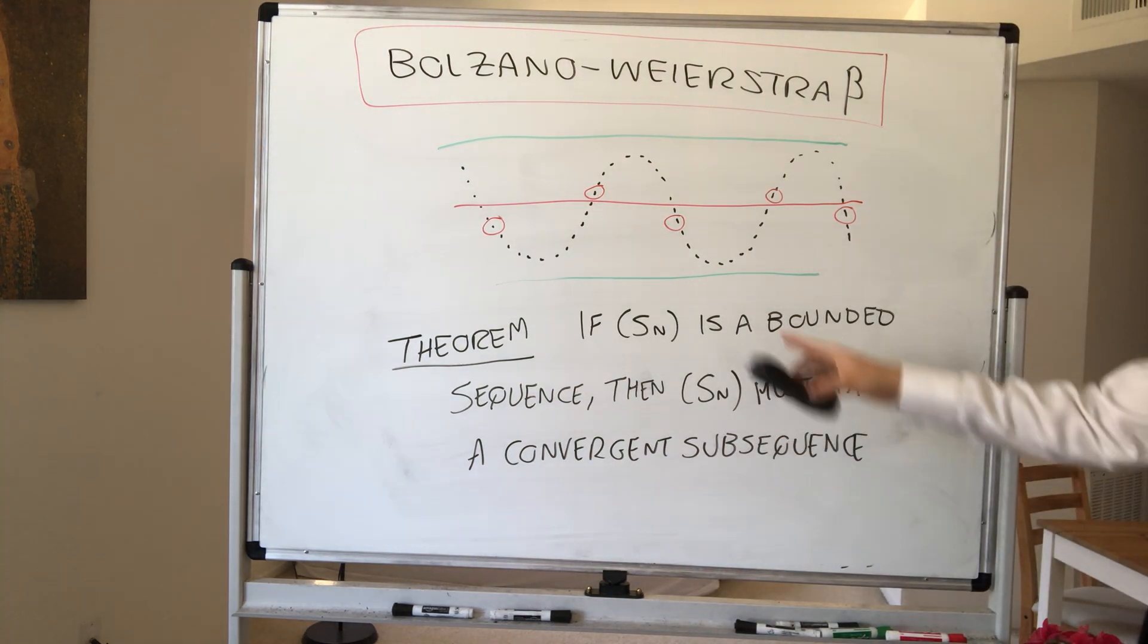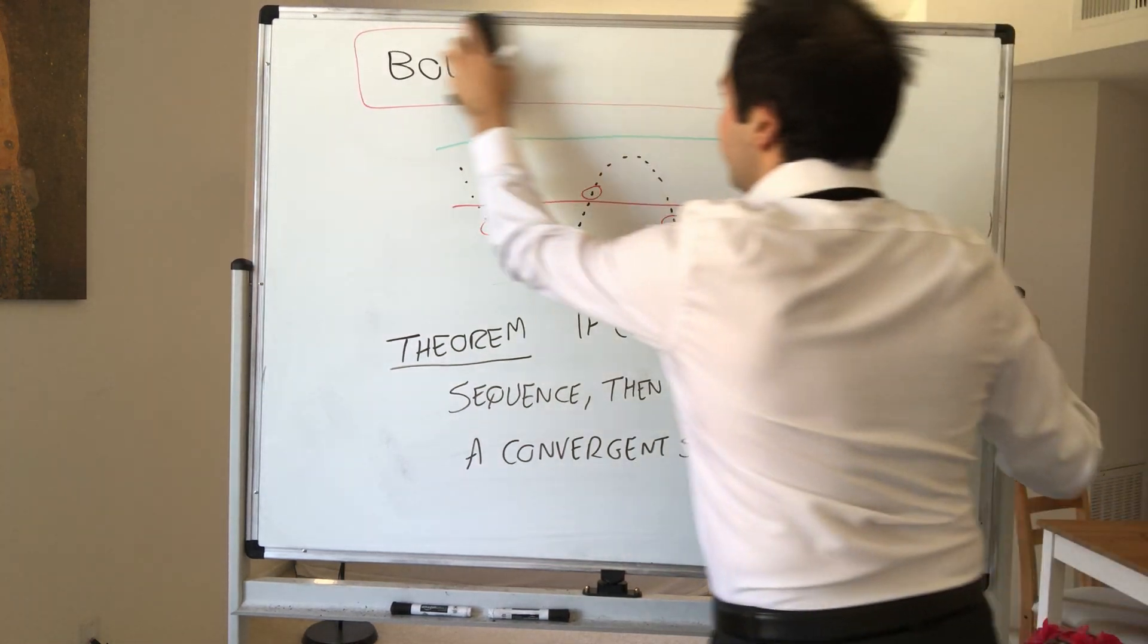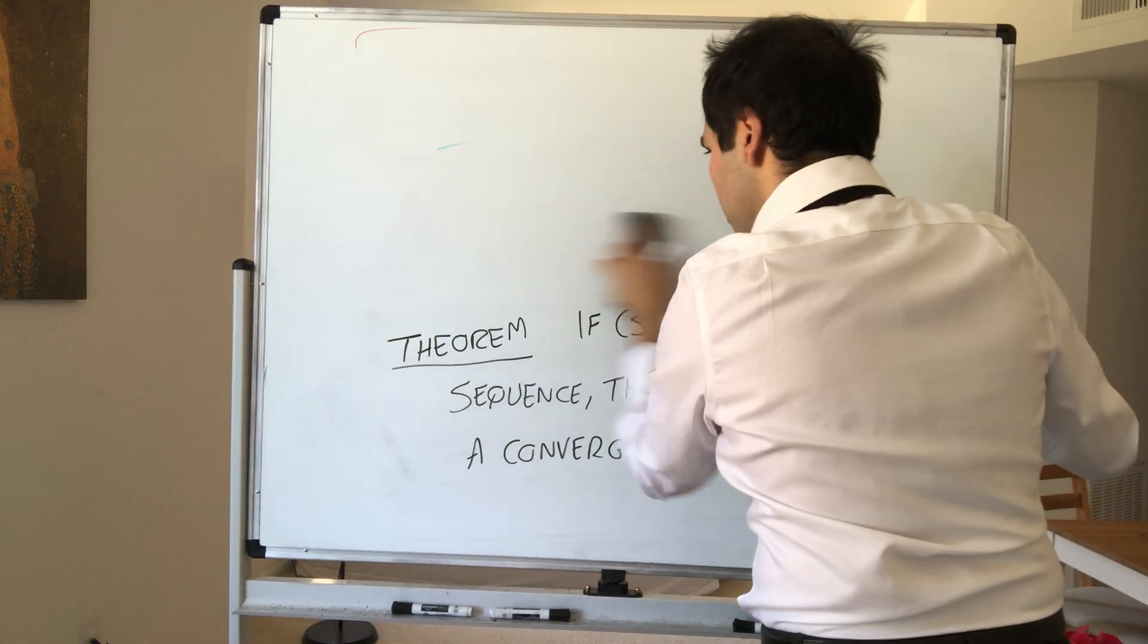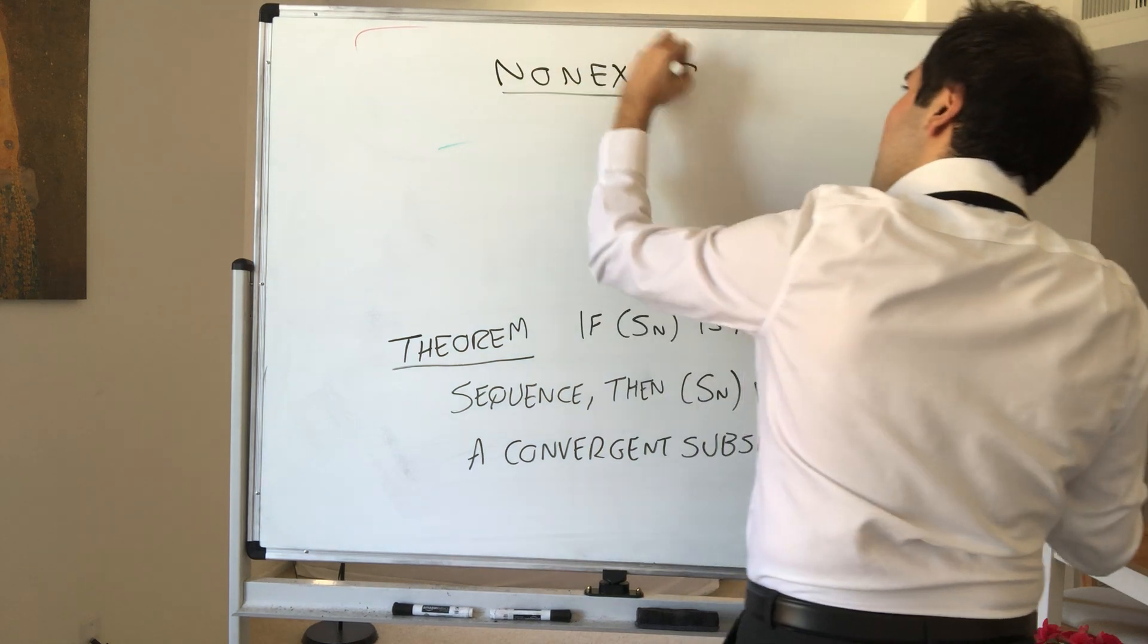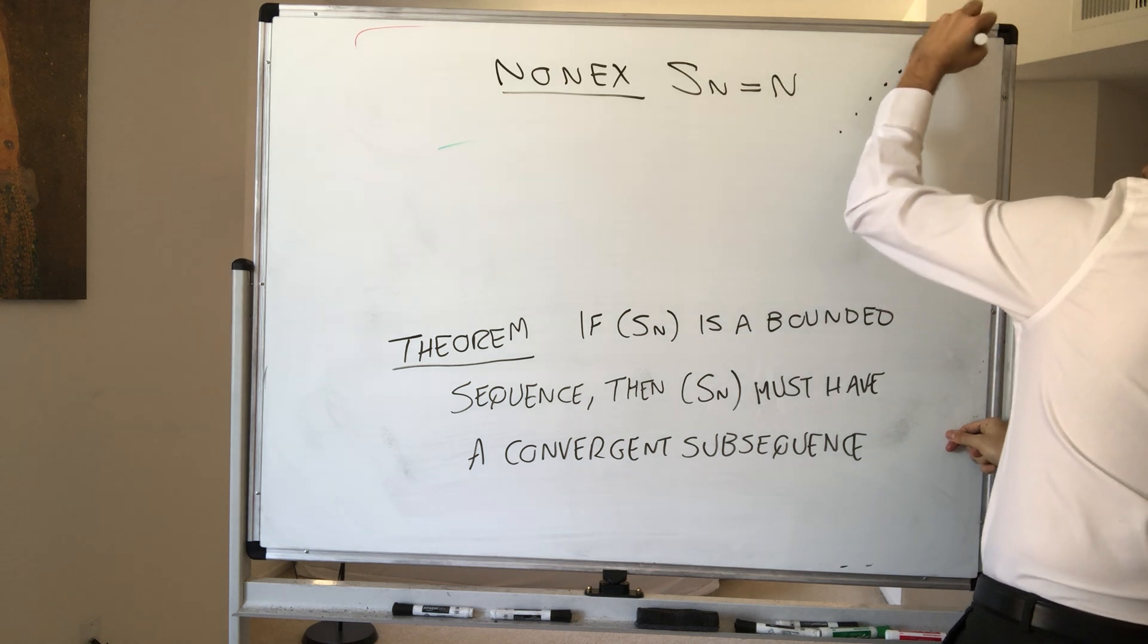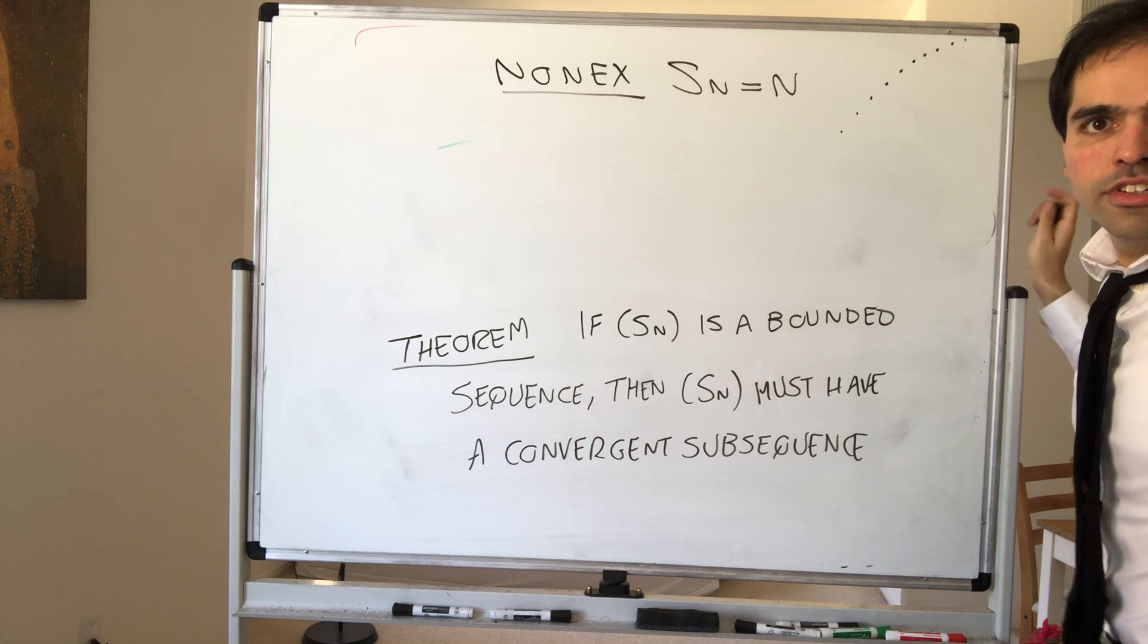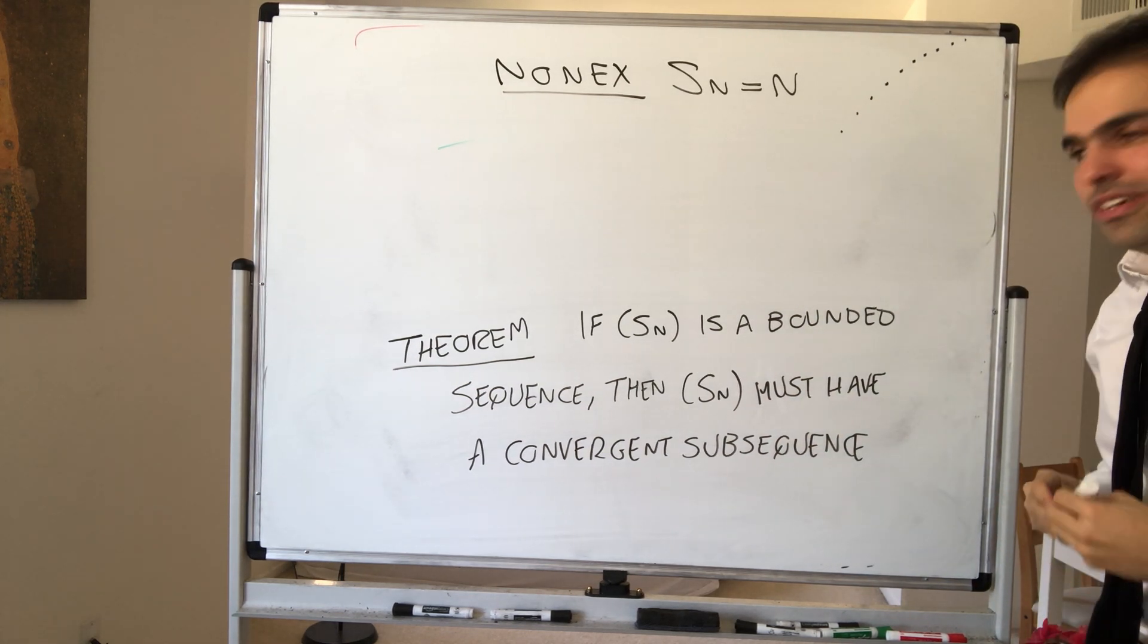And by the way, this theorem is wrong for unbounded sequences, because, for instance, if you take the sequence Sn equals n, well, this one just blows up, and in fact, none of the subsequences converges to a finite number, because every subsequence must go to infinity.